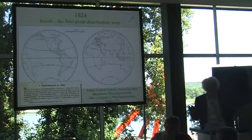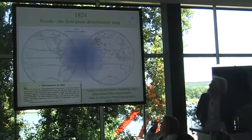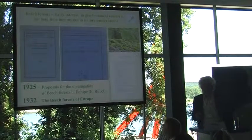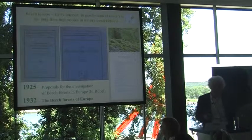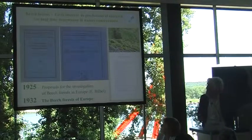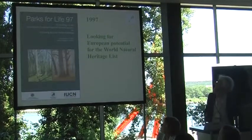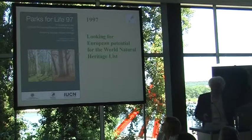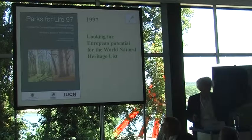The story began nearly 200 years ago with the first distribution map of a plant species, and Fagus is number one in the first atlas for plant geography all over the world. Nearly 100 years later, beech forests came into the focus of geobotanical research, but for nature conservation it was not an issue. In that time, beech forests were ignored for a long time.